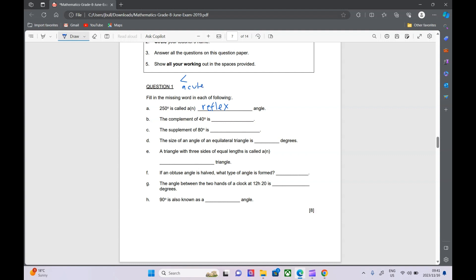If we have 90 degrees, that's a right angle. If we have quite a big angle, that would be obtuse. And if we have a really big angle like this one, 250 degrees, that is going to be a reflex angle.